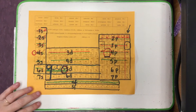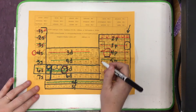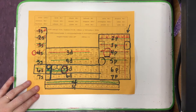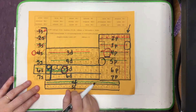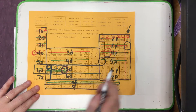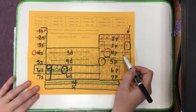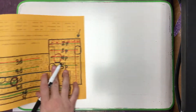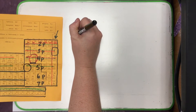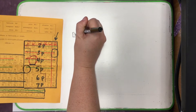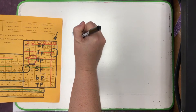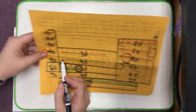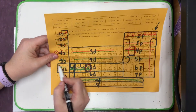Let's start with indium, number 49. If I wanted to start with the shorthand orbital notation of indium, I would find the noble gas that has less electrons than indium, so that would be krypton — that's 36. Then I would go to numbers 37 and 38, which are over here in the 5S room.